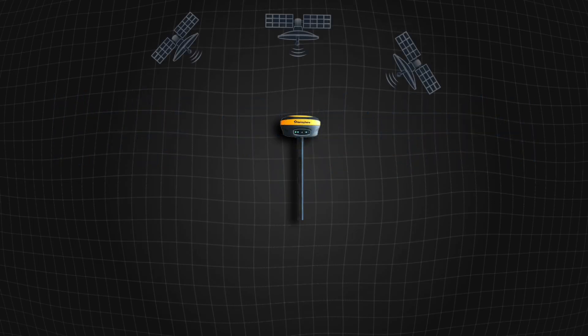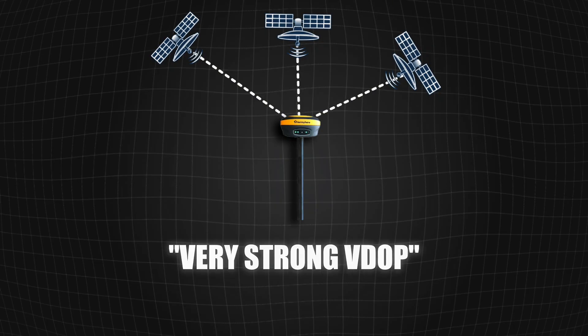A V-DOP, you want satellites with as much vertical difference in your satellites as you can, all the way from almost at the horizon to right above you. That's what you want to get a very strong V-DOP.